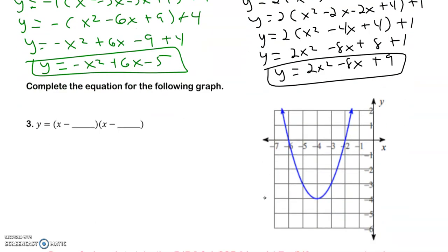Complete the equation by the following graph. All I'm looking for is defining my x-intercepts. So this would be a minus 6 and a minus 2. Thanks for listening, and have a great day.